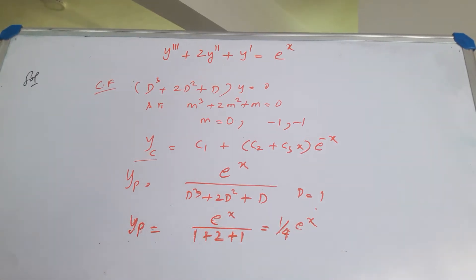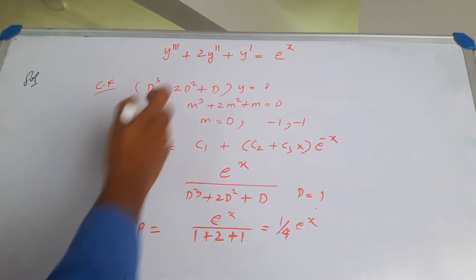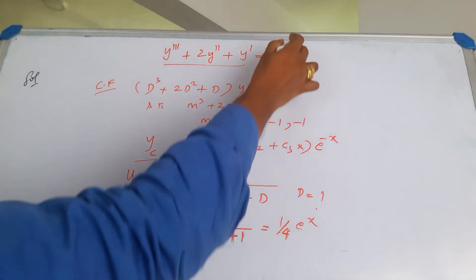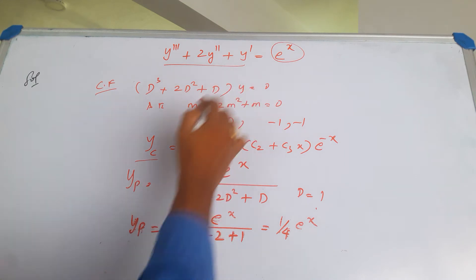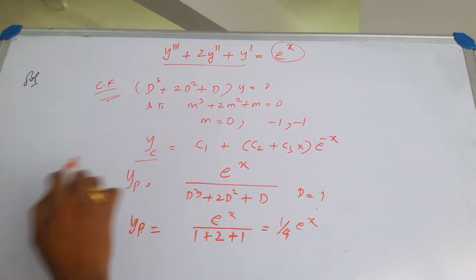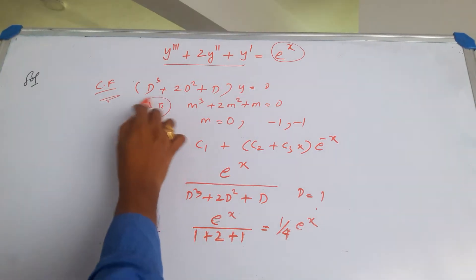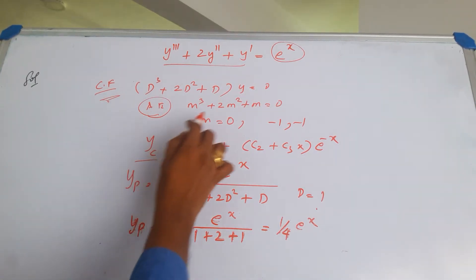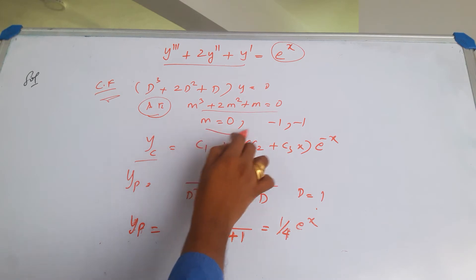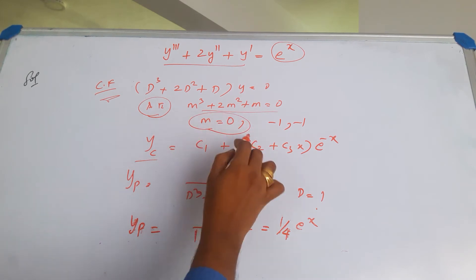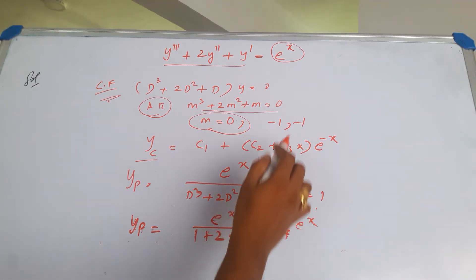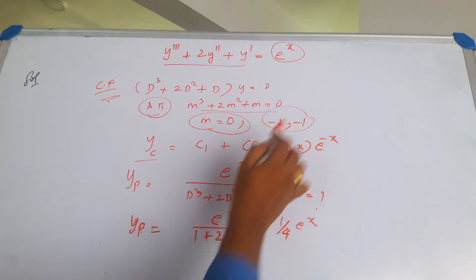To solve this differential equation, which is third order and non-homogeneous, we need to find the complementary function. Let us write the auxiliary equation. The roots are zero, minus one, and minus one.